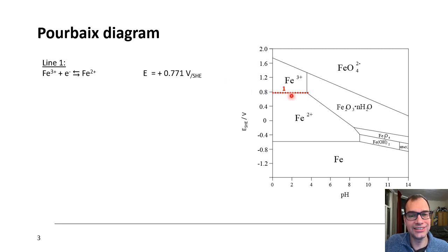You see, it's a straight line. It's independent of pH, which makes sense because there are no protons or hydroxides in this equation. So it makes sense that it's independent of pH. Another relatively easy to understand line is the line between iron 2 and metallic iron, which you see here. And that corresponds to this equation with this potential.